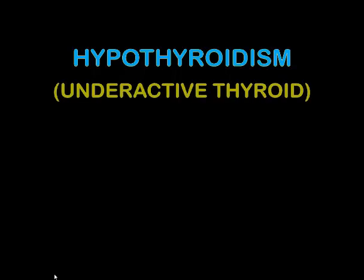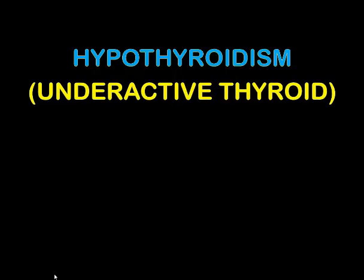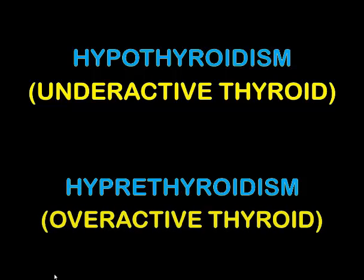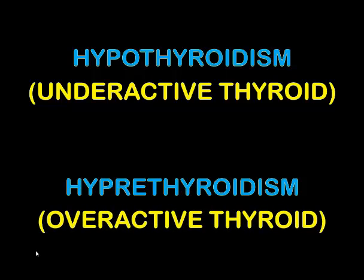Hypothyroidism, also known as underactive thyroid, is a condition in which your thyroid gland is not functioning normally or it is underperforming. Whereas, hyperthyroidism, also known as overactive thyroid, is another condition in which your gland is functioning more than normally.